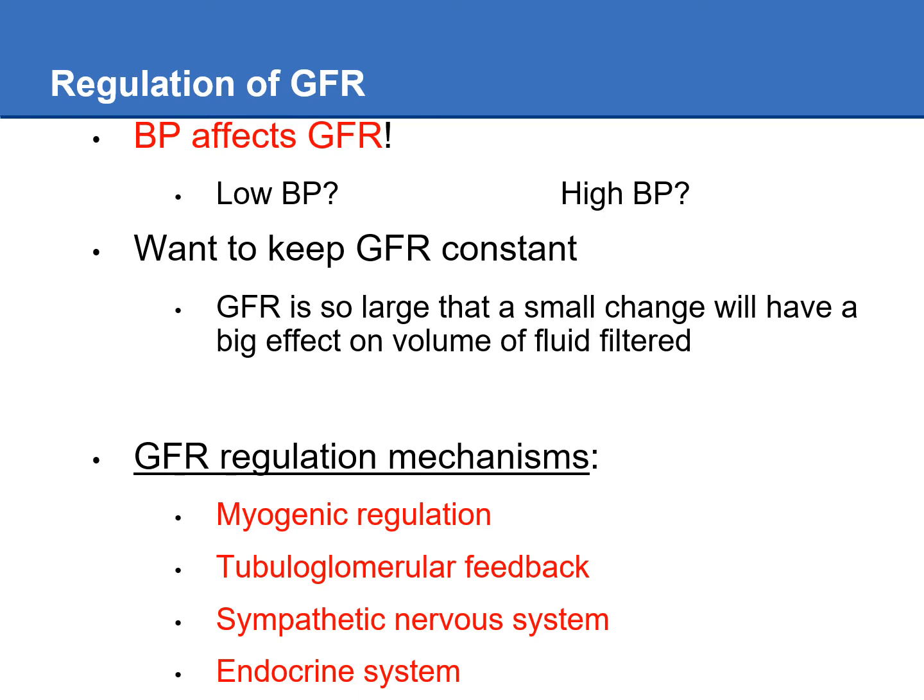Regulating the glomerular filtration rate is really important because blood pressure affects GFR. If blood pressure is too low, not enough blood flows into the glomeruli, pressure drops, and we don't create as much filtrate. If blood pressure is too high, more blood flows in, increasing pressure and GFR. We want to keep GFR constant because even a small change will have a big effect on fluid volume filtered. There are four regulation mechanisms: myogenic regulation, tubuloglomerular feedback, the sympathetic nervous system, and the endocrine system.